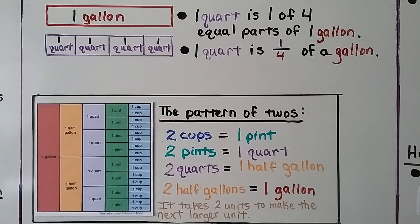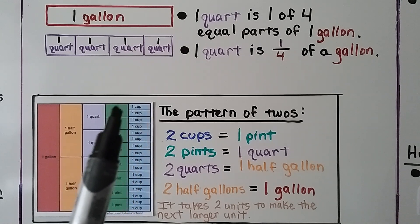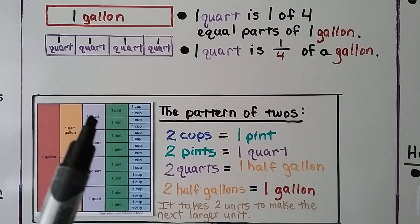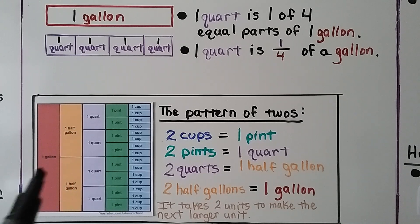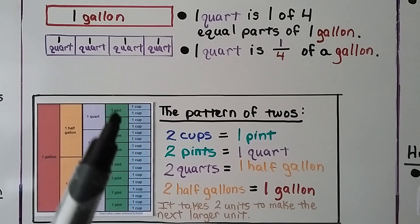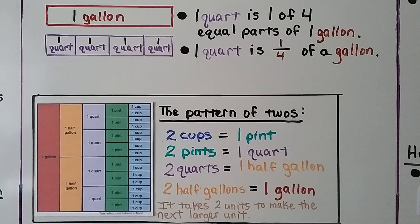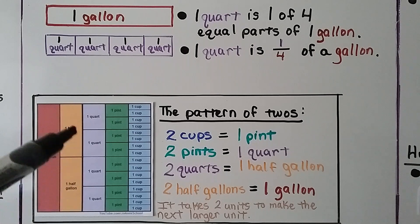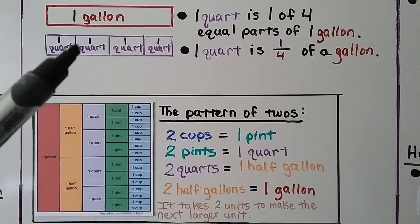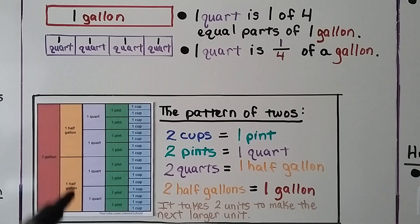For our pattern of twos: two cups equal one pint, two pints equal one quart, two quarts equal one half gallon, and two half gallons equal one gallon. This pattern of twos only works if we include half gallons. We know there are four quarts in one gallon, so don't think there are only two quarts in a gallon — we have to include the half gallon for the pattern of twos to work.